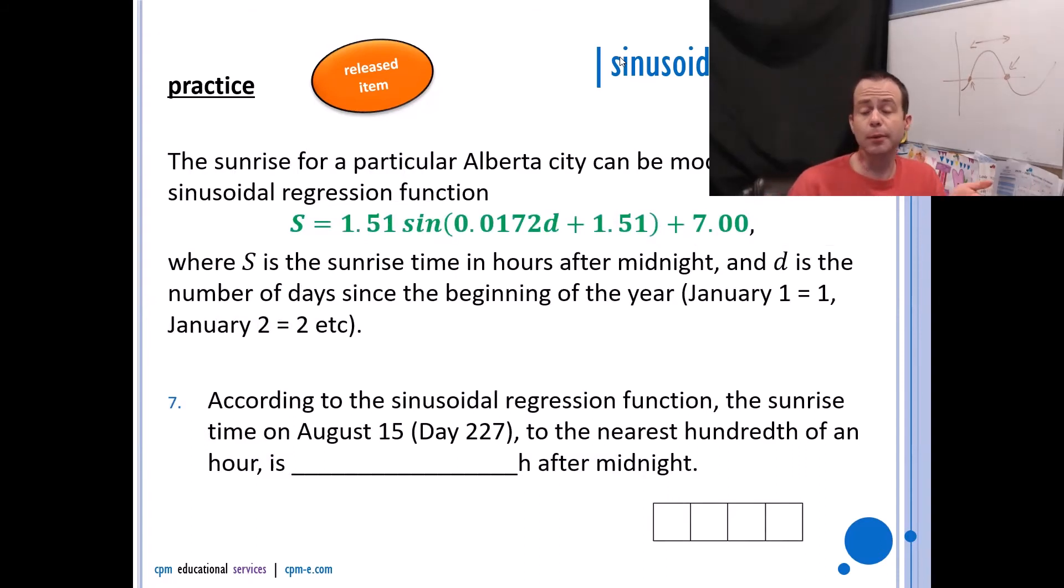According to the sinusoidal regression function, the sunrise time on August 15th—yay, they tell you it's day 227—to the nearest hundredth of an hour is however many hours after midnight. So again, just like we did with polynomial applications, you're asking yourself, have I been given an x or have I been given a y? So in this one, s is your y and your d is your x value, so you actually have been given an x value, the day 227. So you're just plugging 227 in for d. You need to make sure that your calculator is in radian mode. Make sure your calculator is in radian mode. You're going to plug 227 in for d and just type all that in your calculator. You should get 5.85 hours after midnight.